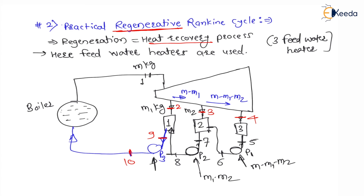Total mass in pump 3 is m, because m − m1 is coming from pump 2 and m1 is coming from the turbine extraction — so m1 + (m − m1) = m. This total mass is again circulated in the boiler where heat is supplied at constant pressure.